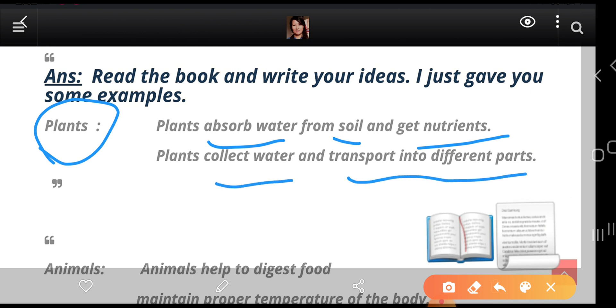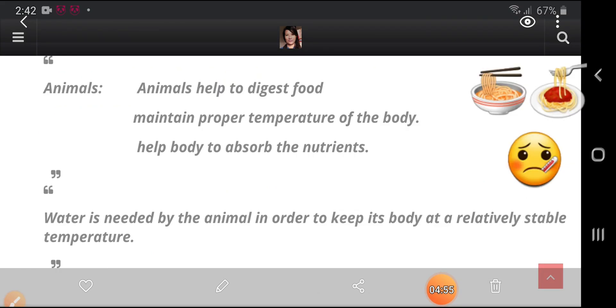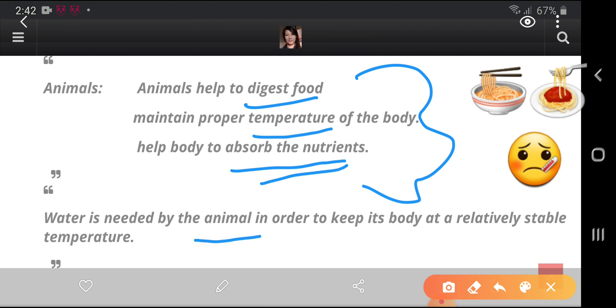Animals, animals help to digest food, that is the reason, maintain proper temperature of the body, help body to absorb nutrients. All the items we find it from textbooks. Water is needed by animals in order to keep its body at a relatively stable temperature. You write your example.